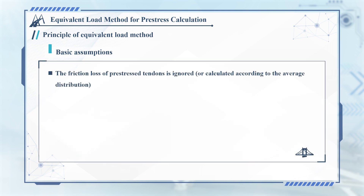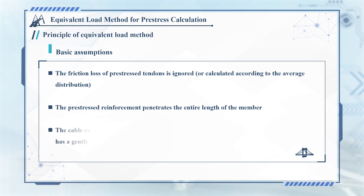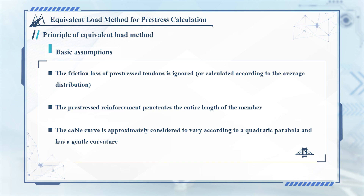Friction loss of pre-stressed reinforcement is ignored. The pre-stressed reinforcement runs through the whole length of the member. The cable curve is approximately regarded as changing according to a quadratic parabola, and the curvature is flat.